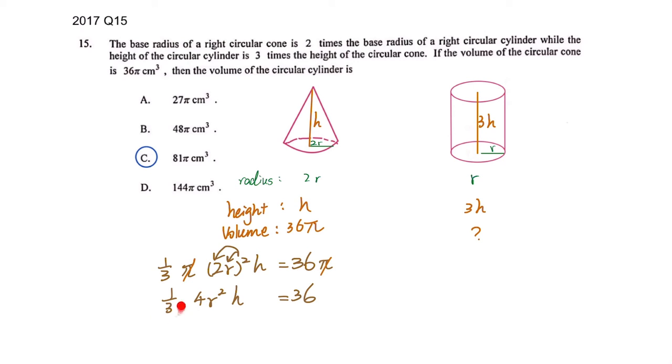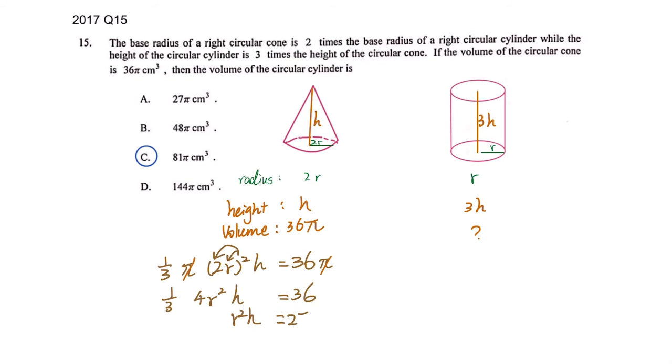And then now 36, you have 2 times 3 here, you have to divide this 1/3 and also 4 because it was multiplying with this. So your r²h will be left with, can you please use calculator, 36 divided by 4 and also divided by 1/3, you should be able to get 27 as your result.